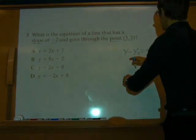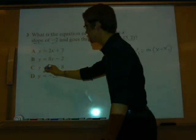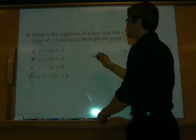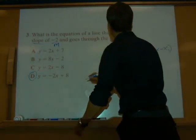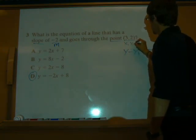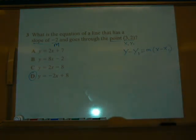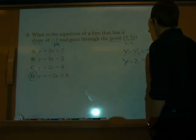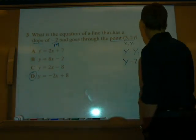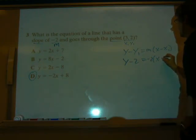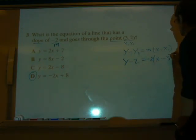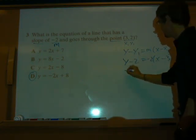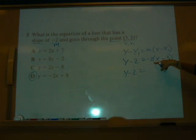But let me plug in to this formula to show you that you will get answer choice D. Remember, this is our m. The slope, we always call m. The point, we always call x1, y1. So now we're just going to plug in. Y minus 2 equals m, negative 2, times x minus 3. That's our x1. It's what we just did. Just distribute this negative 2, and then you're going to bring this negative 2 over at the end.